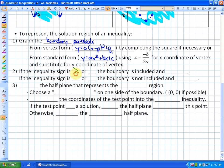Second step. If the inequality sign is ≥ or ≤, the boundary is included, and that parabola will be a solid line. If the inequality sign is < or >, the boundary is not included, and therefore would be a dotted or a dashed line.